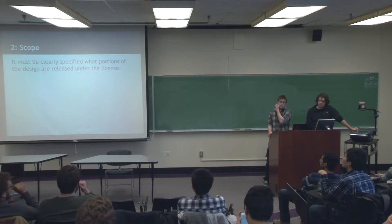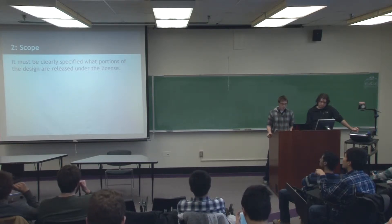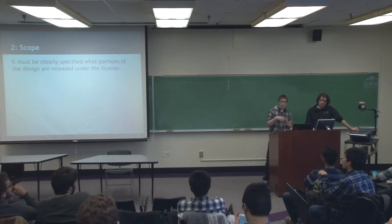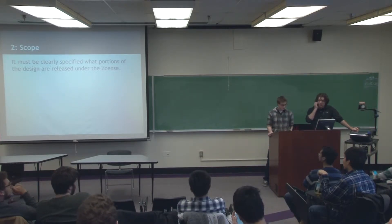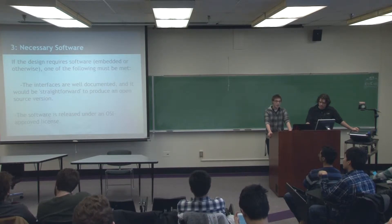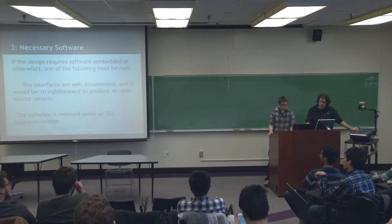On the scope, you have to designate in the license what part of your project is open source, because you can have a closed source project and then open source some of it. All the necessary software has to be open source and approved under an OSI license that Colin was talking about a few weeks ago — all the software for your embedded design needs to be open source.